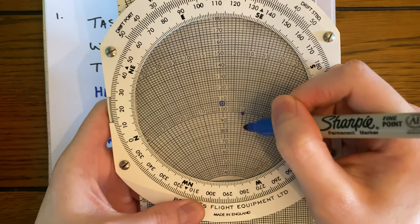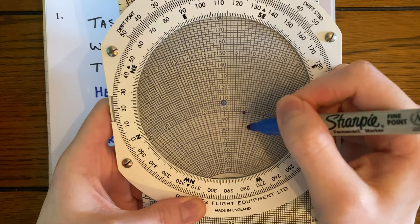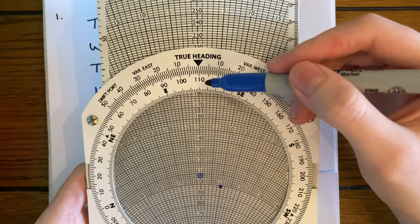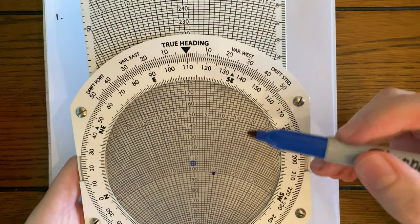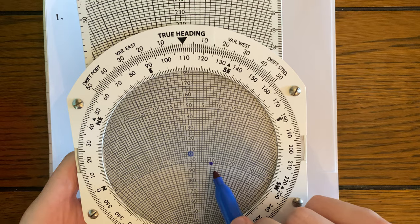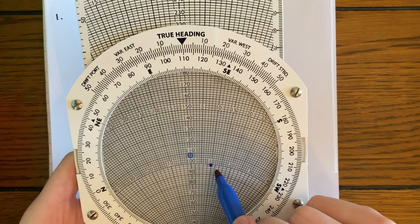And we've done that, and we can see that it is along the 10-degree line. So this is a simple direct reading. We said our track was 110 degrees. Our heading is just going to be add 10 degrees to that, so our heading is going to be 120 degrees.